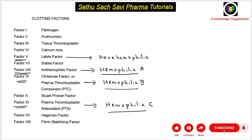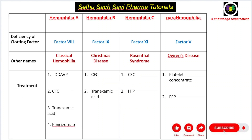Hemophilia A is also called classical hemophilia and is the most common hemophilia, caused by deficiency of factor 8. Hemophilia B is caused by deficiency of factor 9. Hemophilia C is caused by deficiency of factor 11, and Parahemophilia is caused by deficiency of factor 5.